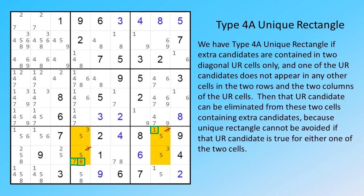We have type 4 unique rectangle if extra candidates are contained in two diagonal UR cells, and one of the UR candidates does not appear in any other cell in the two rows and the two columns of the UR cells. Then that UR candidate can be eliminated from these two cells containing extra candidates, because the unique rectangle cannot be avoided if that UR candidate is true for either one of the two cells.